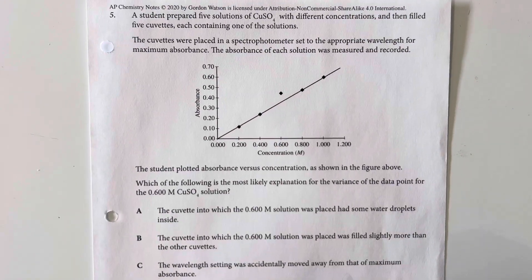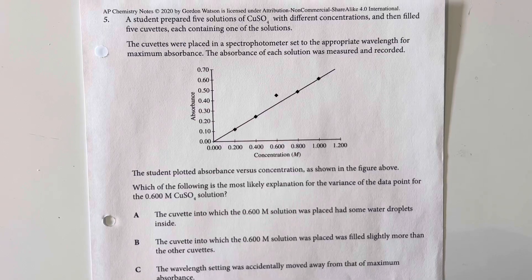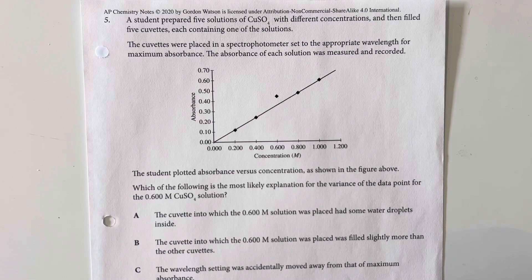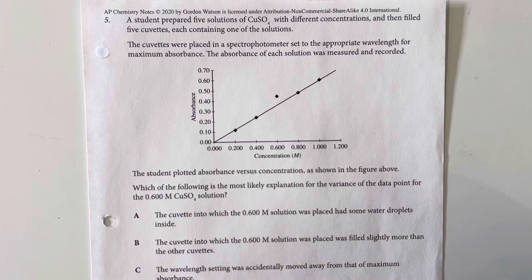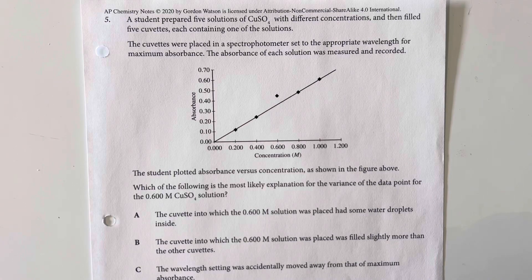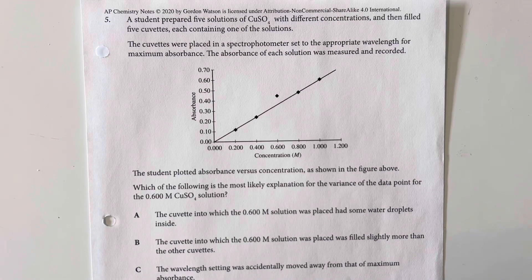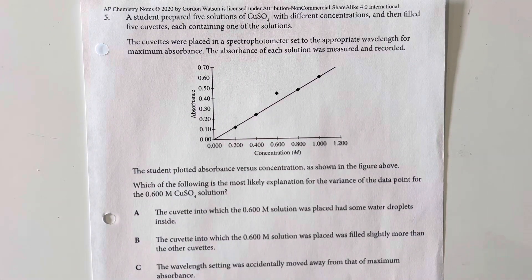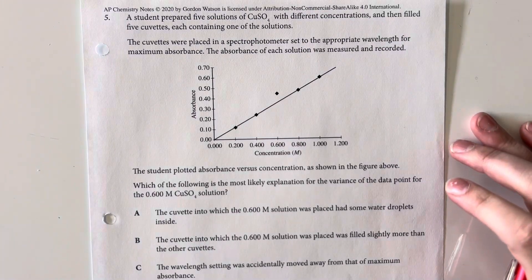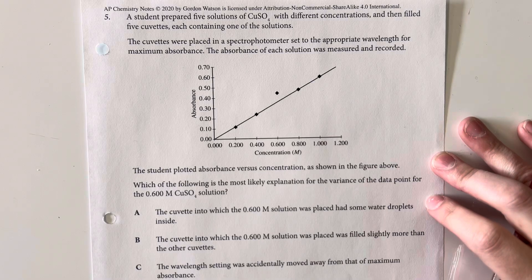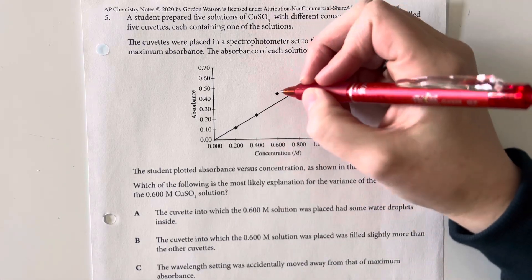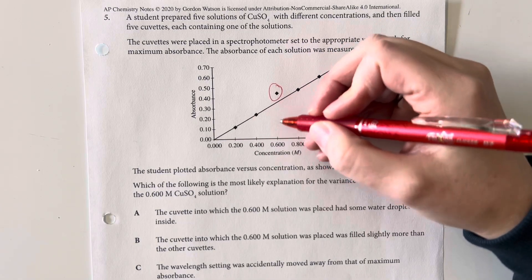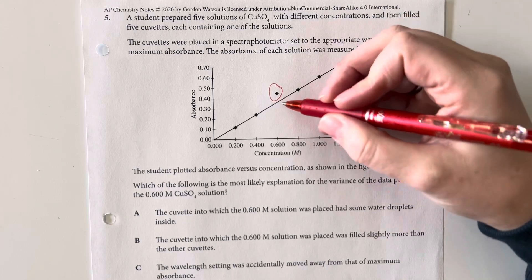A student prepared five solutions of copper 2 sulfate with different concentrations, and then filled five cuvettes, each containing one of the solutions. The cuvettes were placed in the spectrophotometer set to the appropriate wavelength for the maximum absorbance. The absorbance for each of the solutions is measured and recorded. The student plotted the absorbance versus concentration as shown in the figure above. Which of the following is most likely explanation for the variance of the data point of the 0.6 molar copper 2 sulfate solution? So we can see that the 0.6 molar copper sulfate solution is higher than we were expecting. It's a higher absorbance than we were expecting. It's almost the same as the 0.8.